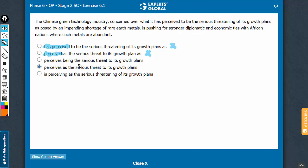To eliminate further answer choices, we need to go a bit deeper into the meaning. The Chinese green technology industry, concerned over something, is pushing for something. This part of the meaning, is pushing for something, is something which is happening currently.